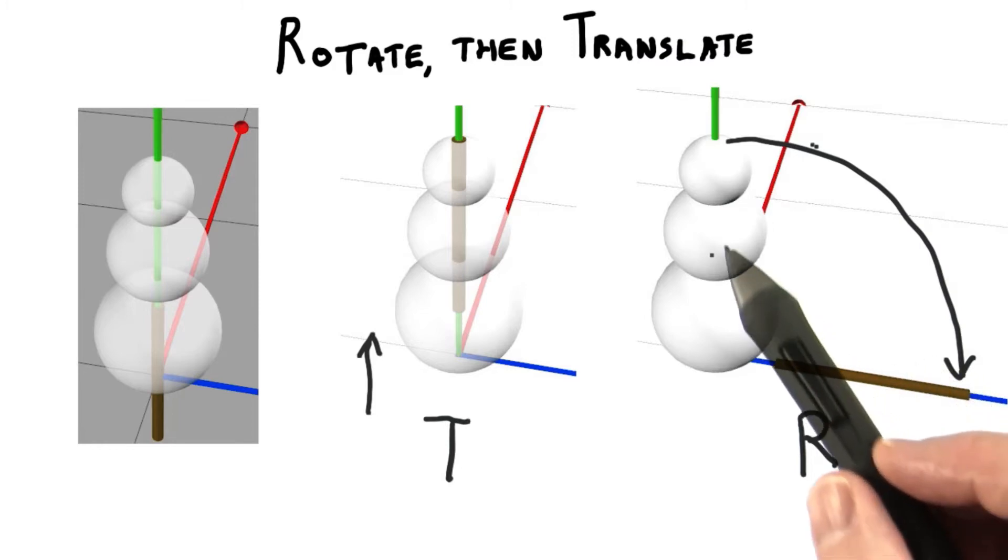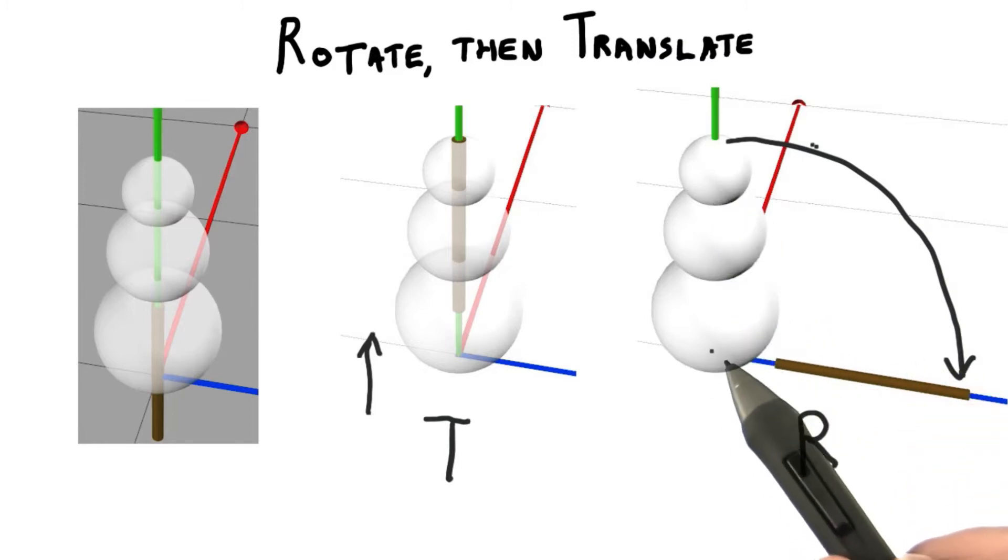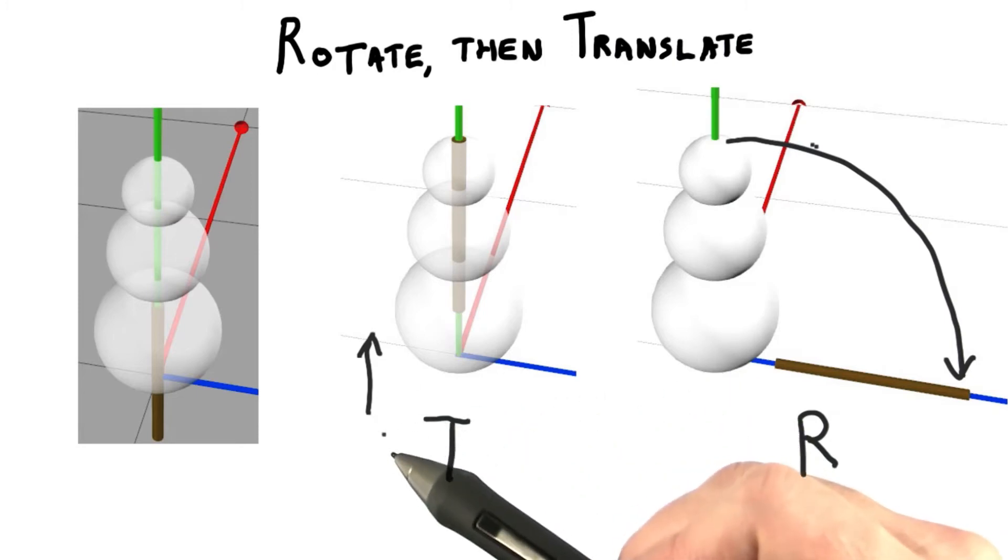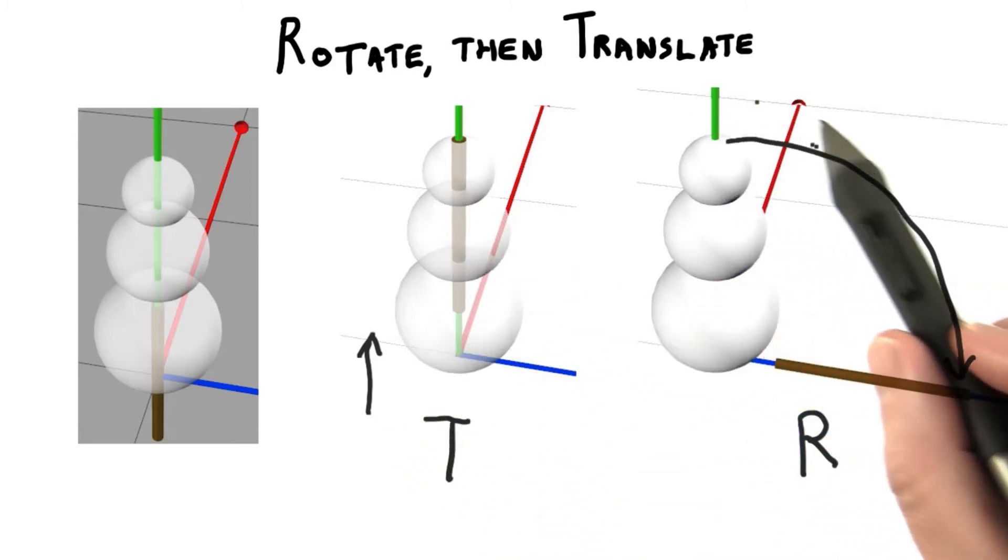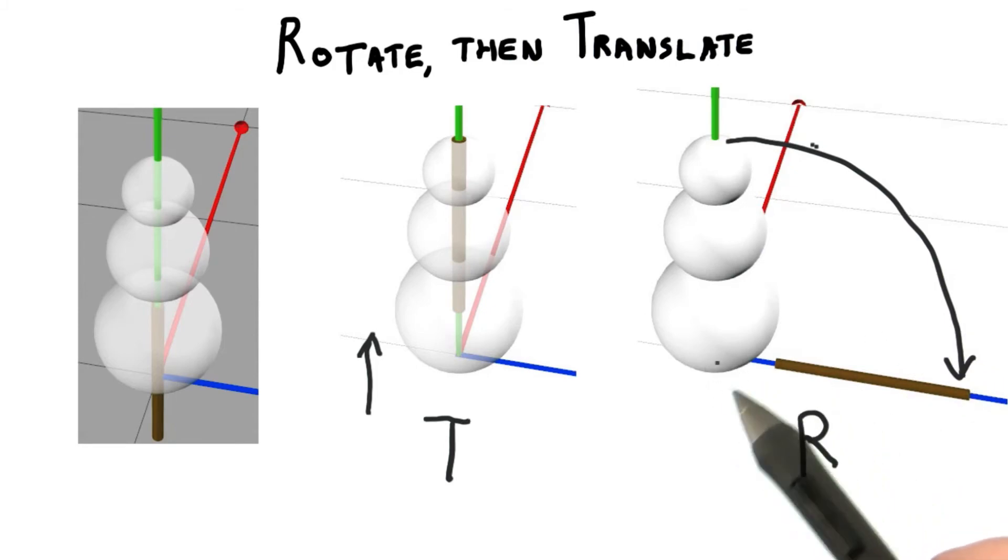The problem is that the rotation takes place with respect to the origin. In the first step, we moved our stick up above the origin. In the second, we rotated the stick, but it rotated around the origin.